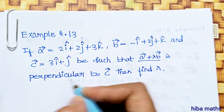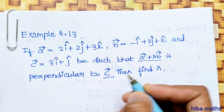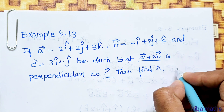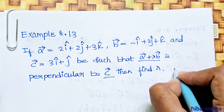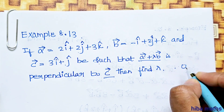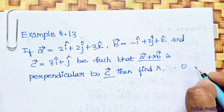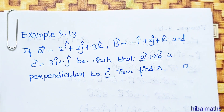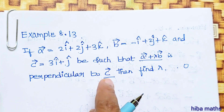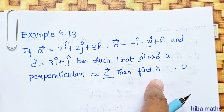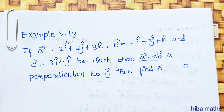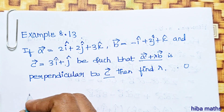Since one vector is perpendicular to another vector, the dot product is zero. So the dot product is equal to zero, which means the unknown lambda is equal to 8.